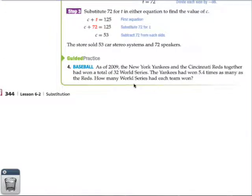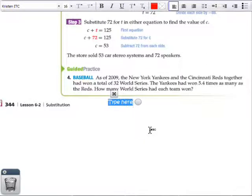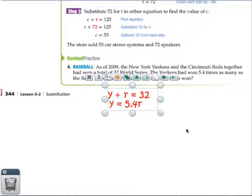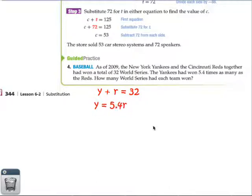In number 4, the New York Yankees and Cincinnati Reds had won a total of 32 World Series, so the equation is y + r = 32. The Yankees had won 5.4 times as many as the Reds, so y = 5.4r. Those are our two equations. Go ahead and solve both of those.